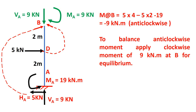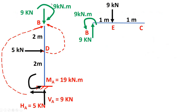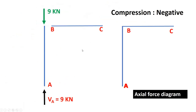If you check the equilibrium condition at B — sigma Fx, sigma Fy, and moment — everything will be zero. Opposite reactions are applied: downward 9, upward 9, clockwise 9, anti-clockwise 9. At point C, upward 9 minus downward 9 is zero, and clockwise 9 with nine into one clockwise also sums to zero. So at point C we don't need to apply anything — this member is already in equilibrium.